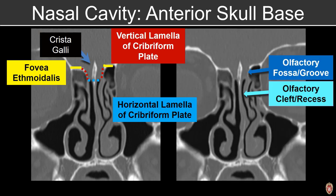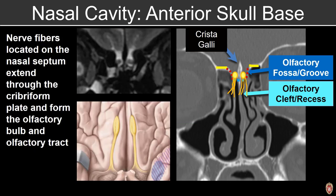Cradled within the cribriform plate is the olfactory fossa, which houses the olfactory bulb. Below the cribriform plate, we have the olfactory recess or olfactory cleft, and that should be filled with air. The olfactory bulb has little projections that communicate with the nasal cavity, which help facilitate olfaction.